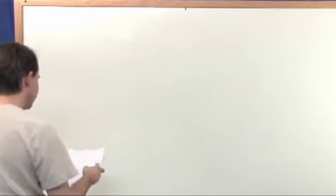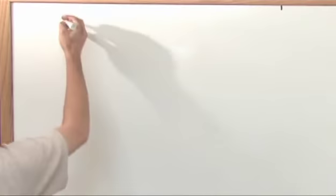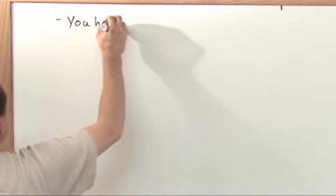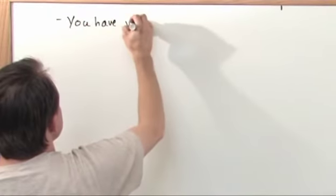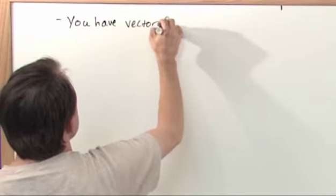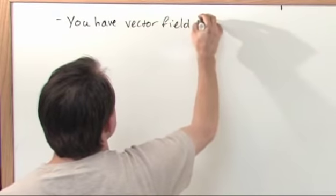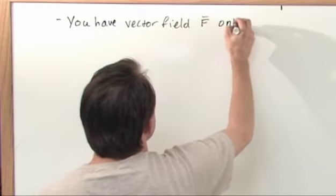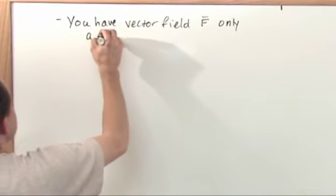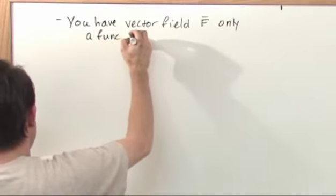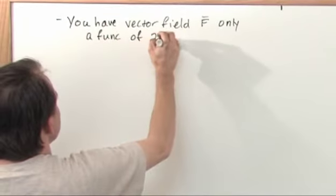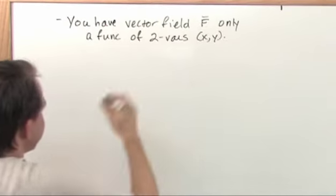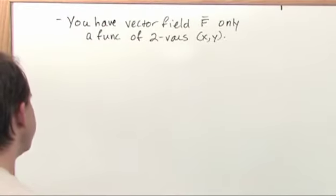So let's say you have a vector field F that's only a function of two variables, let's call them x and y. So that's what I'm just telling you, the vector field is a simple one. It's only a function of two variables.